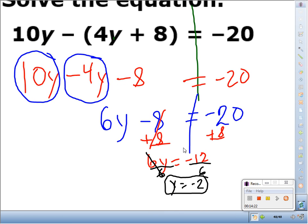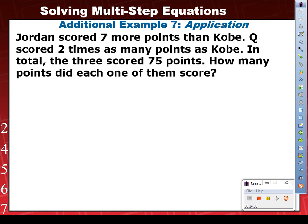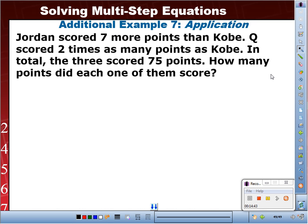So, make sure, guys, when you see this, because in the homework you have a couple of these that have negatives in front of the parentheses. Identify that you need to change all the signs and drop the parens. Are we there so far? Okay. Next, copy this next one down, please. Example 8. Wow. It says Jordan scored 7 more points than Kobe. Q scored 2 times as many points as Kobe. In total, the 3 scored 75 points. How many points did each of them score? So, copy that, please. You don't have to copy everything. Just the black text. Go.